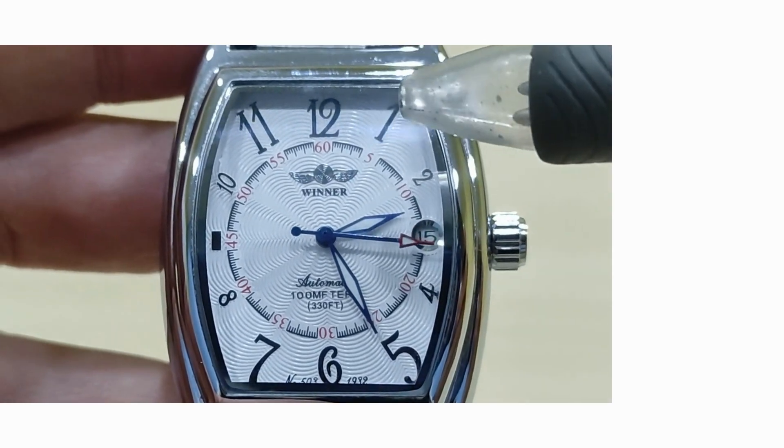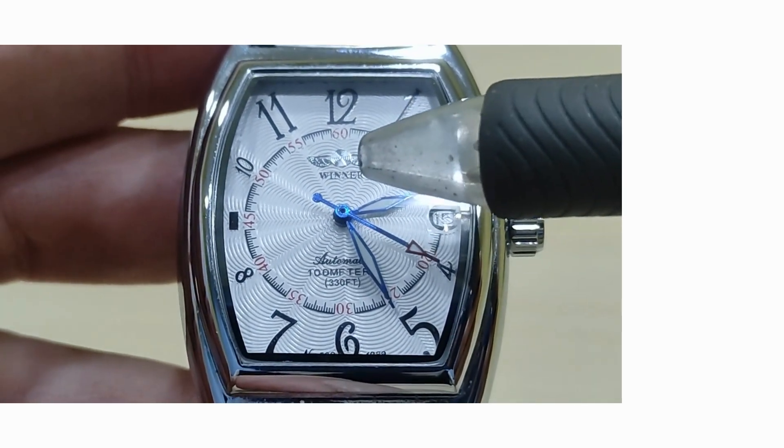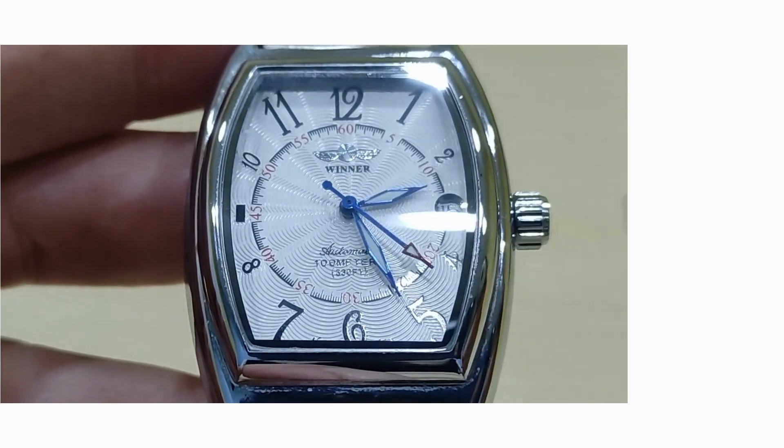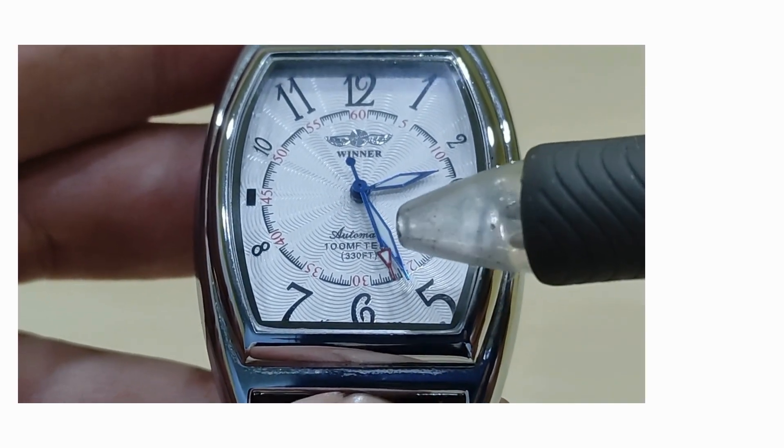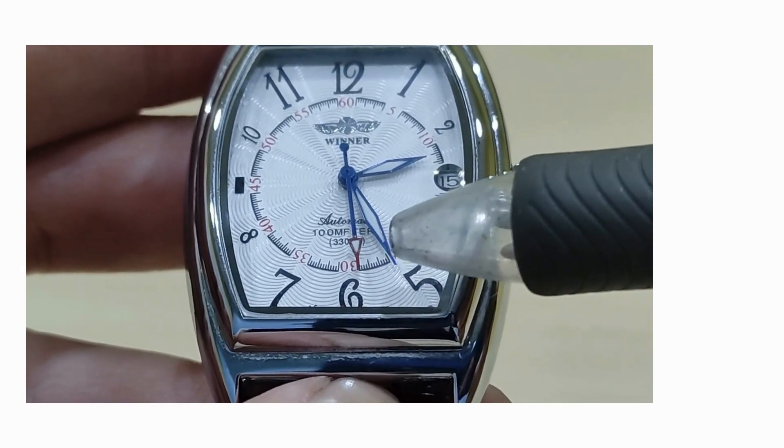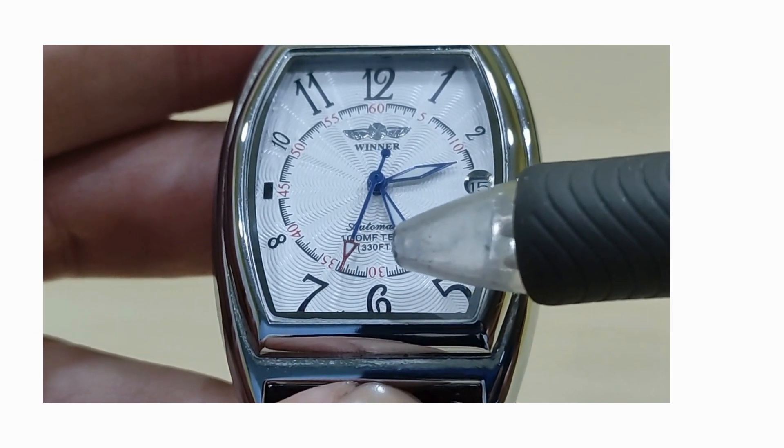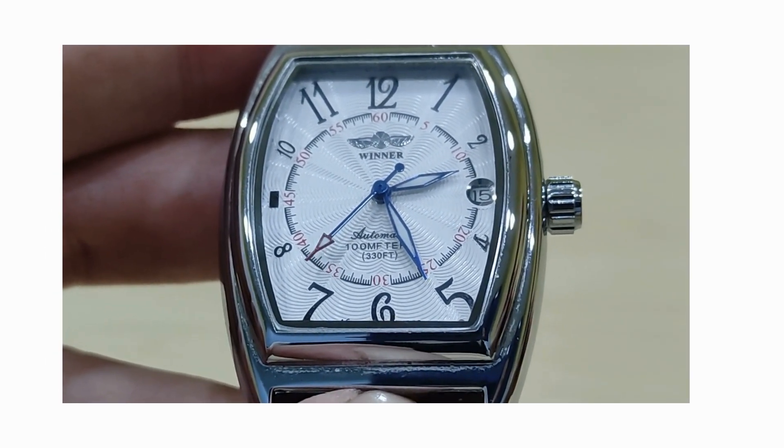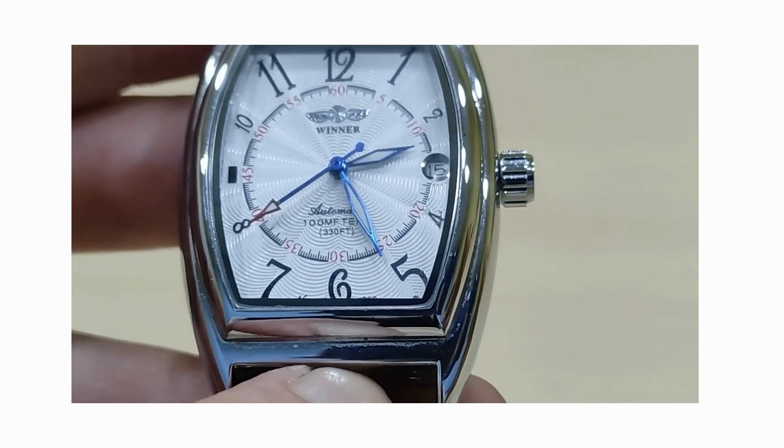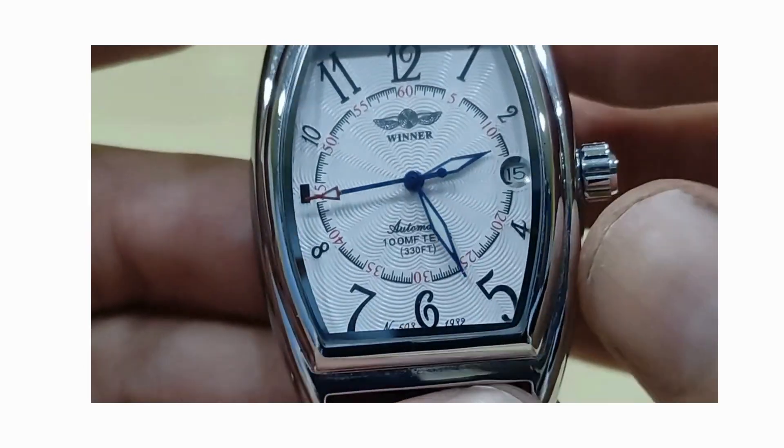Below the twelve you have the Winner logo which is applied, and the Winner name just below that. Above the six you have the word automatic, 100 meters and 330 feet. I'm not sure how accurate that is, although the case itself is screw-on, so that may be correct 100 meters, but I wouldn't test it myself.